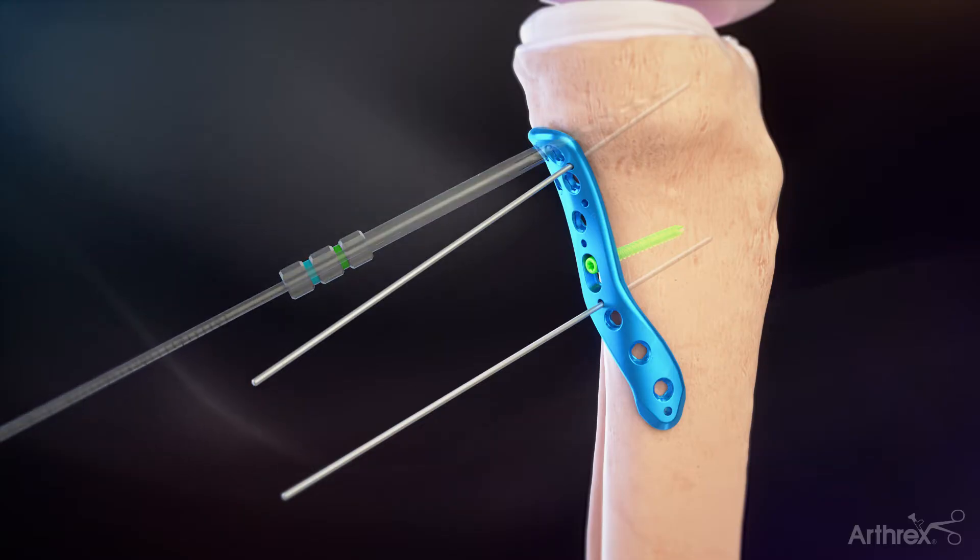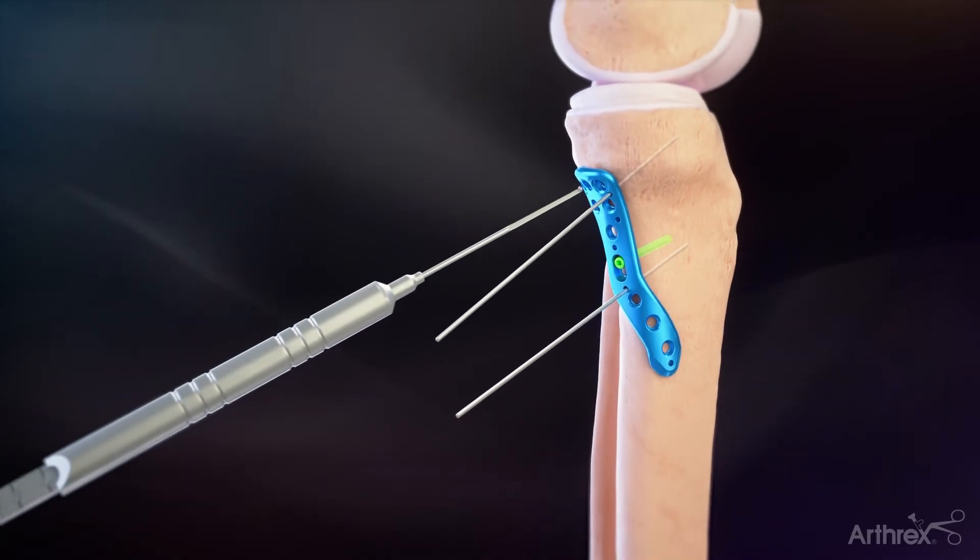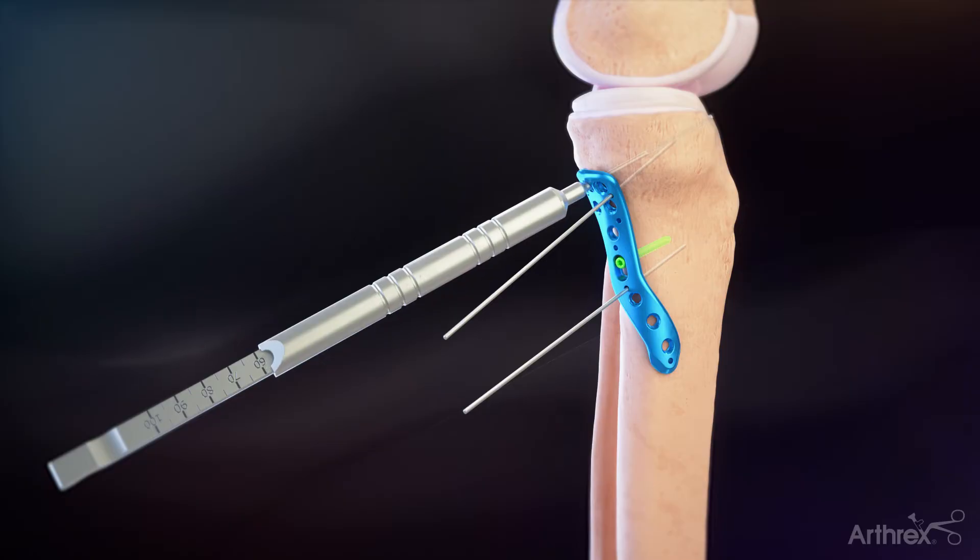Drill through the guide with the 2.8 mm drill and use the calibrations or the hook tip depth gauge to determine the screw length.